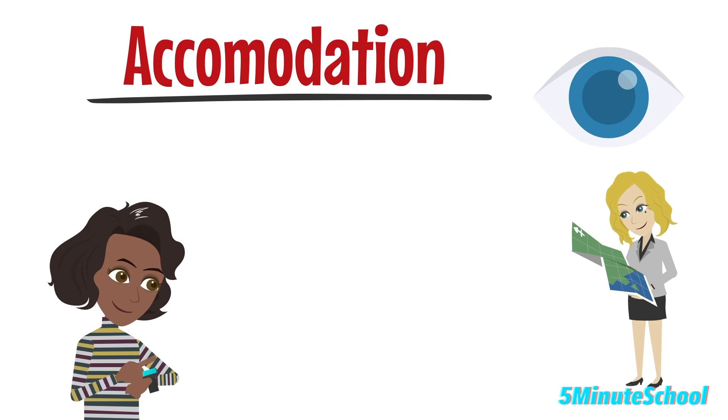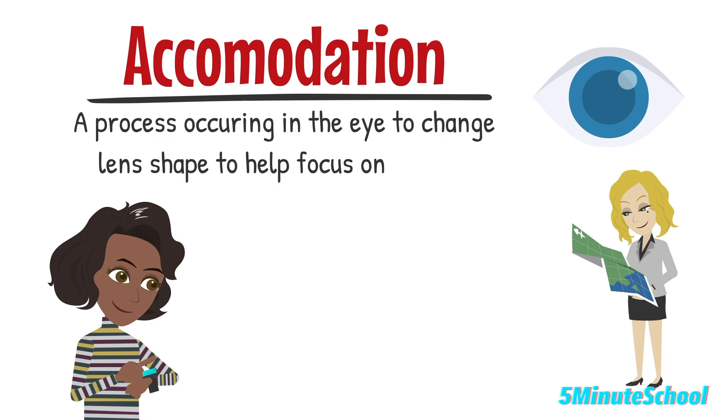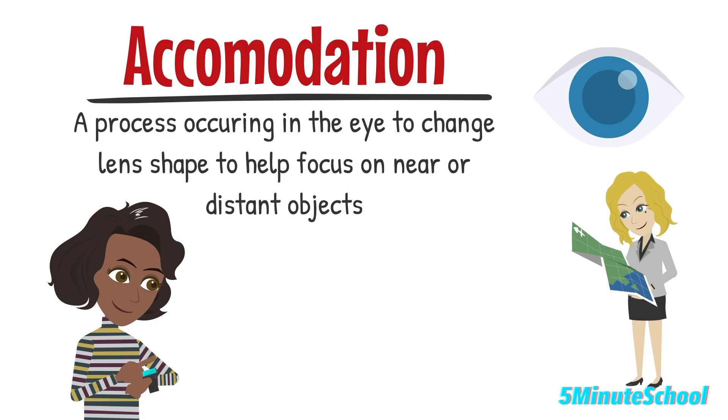The first process is accommodation. This is the process of changing the shape of the lens of the eye to focus on near or distant objects.